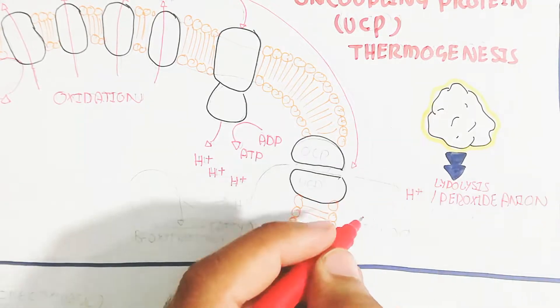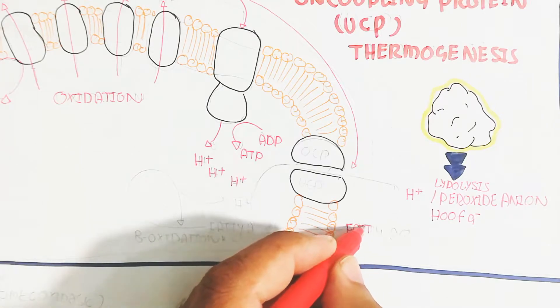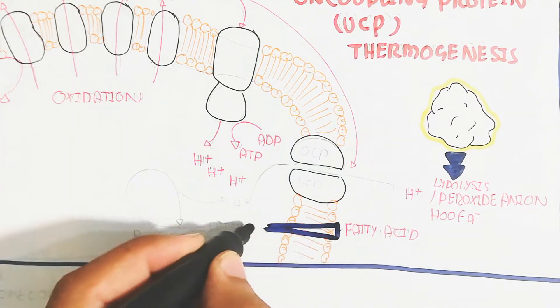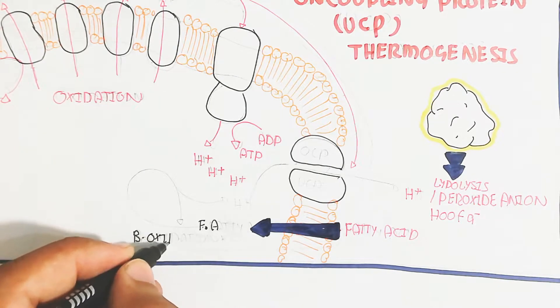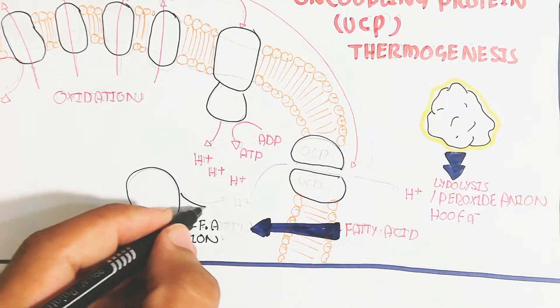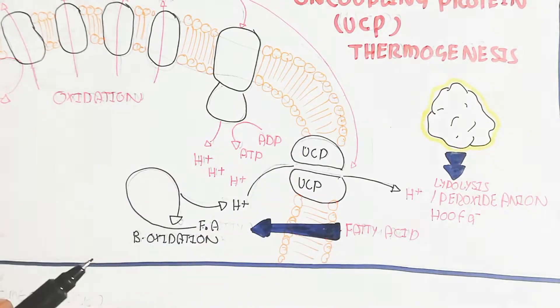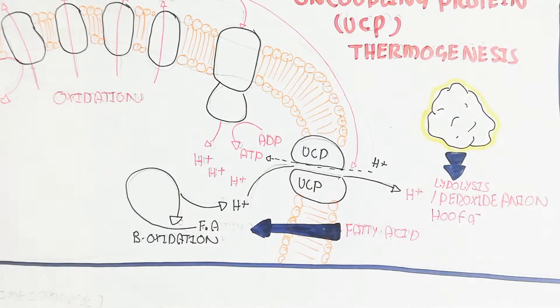But here you can see this is the UCP. UCP is used for the proton to move inside to produce heat due to the loss of energy. Due to the proton gradient, inside is less while outside the concentration of protons is more. So the rush of protons inside will lead to produce heat.